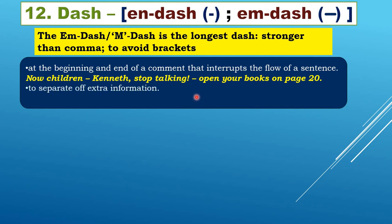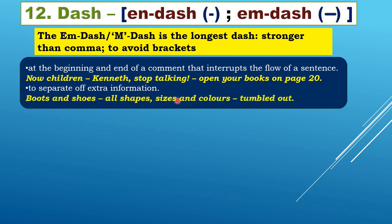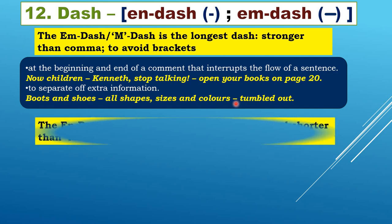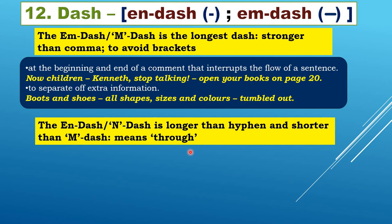The m-dash is also used to separate off extra information: 'Boots and shoes — all shapes, sizes, and colors — are on sale.' You could use brackets here too, but the m-dash is also fine. The n-dash is longer than a hyphen but shorter than an m-dash. The name comes from their widths — n is narrower, m is wider.